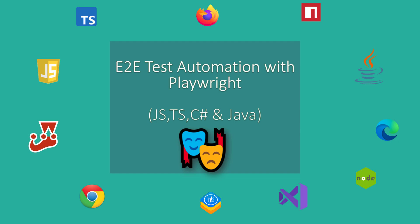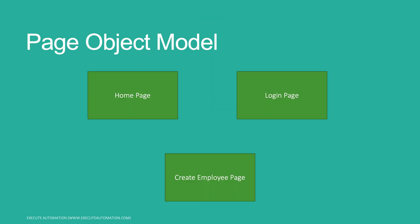In this lecture we are going to talk about how we can actually create a page object model for our eaapp.swami.com, or the employee app website. We have been discussing about this website and we also created a page object model with the TypeScript language binding in our earlier section, and in this section we are going to create the same kind of page object model for the application that we have been automating.